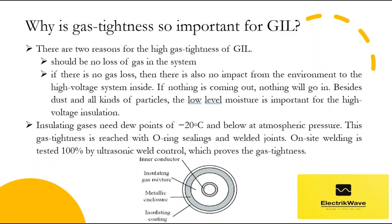Why is gas tightness so important for GIL? There are two reasons. First, there should be no loss of gas in the system, because it is needed to keep the insulation of the high voltage and to stay in operation. Second, if there is no gas loss, then there is also no impact from the environment to the high voltage system inside — if nothing is coming out, nothing will go in. Besides dust and particles, low-level moisture is important for high voltage insulation; insulating gases need dew points of minus 20 degrees Celsius and below at atmospheric pressure. This gas tightness is achieved with ring sealings and welded joints, and on-site welding is tested 100% by ultrasonic weld control, which proves gas tightness.